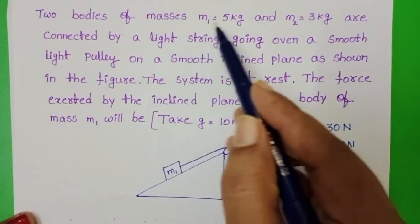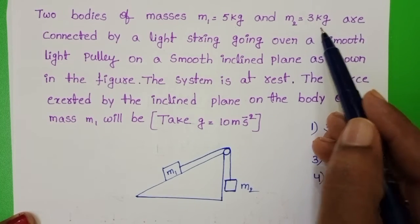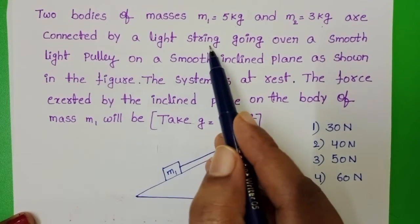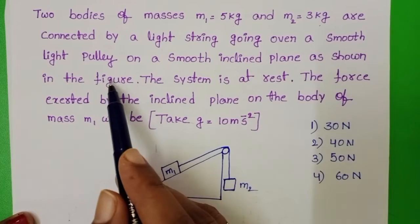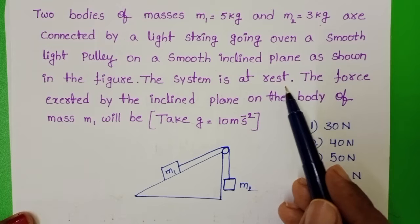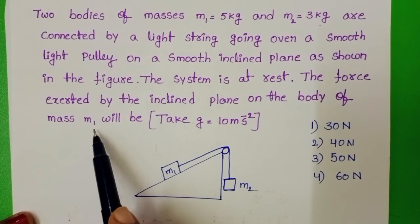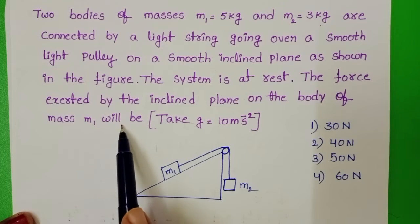Two bodies of masses M1 equals 5kg and M2 equals 3kg are connected by a light string going over a smooth light pulley on a smooth inclined plane as shown in the figure. The system is at rest. The force exerted by the inclined plane on the body of mass M1 will be?